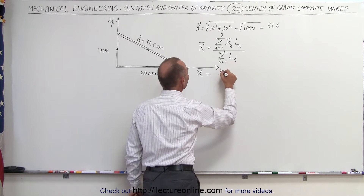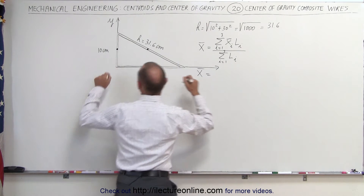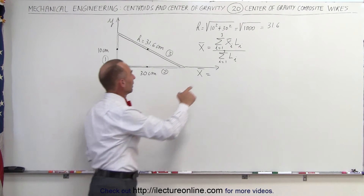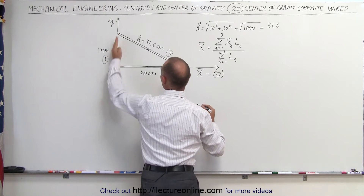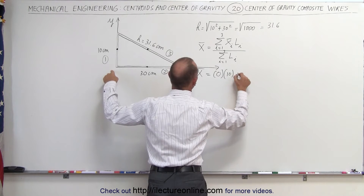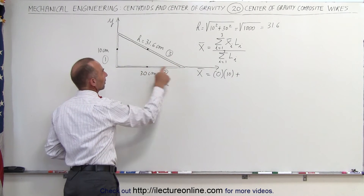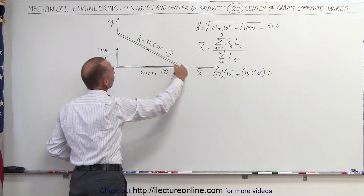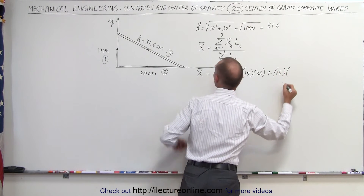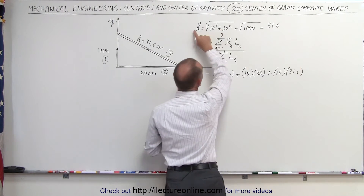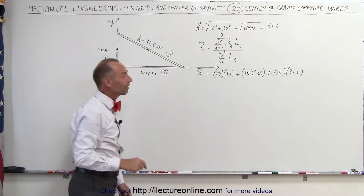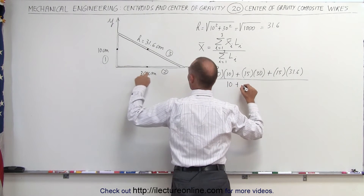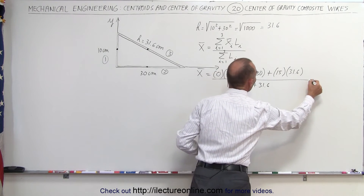The x-coordinate equals the x-coordinate of the first piece. Let's label them: piece one, piece two, and piece three — the three pieces forming the whole triangle. In the x-direction, piece one's coordinate is zero because it lies along the y-axis, and its length is 10 centimeters. For piece two, the x-coordinate is 15 centimeters and the length is 30 centimeters. For the slanted piece three, the x-coordinate is also 15 centimeters, and its length is 31.6 centimeters — found using the Pythagorean theorem since it's the hypotenuse. The denominator is the sum of all lengths: 10 plus 30 plus 31.6 centimeters.